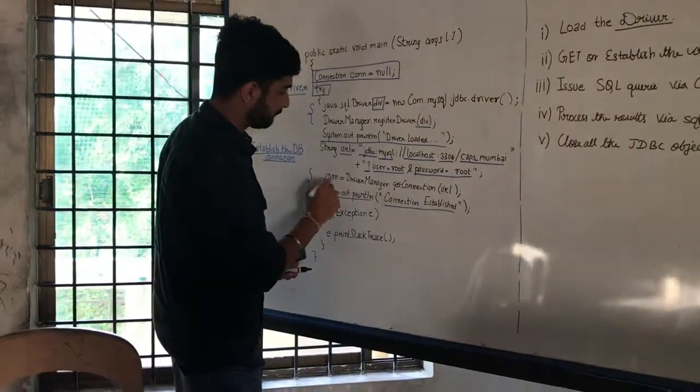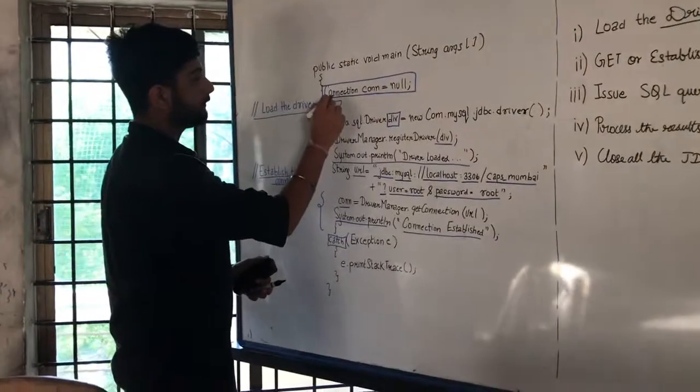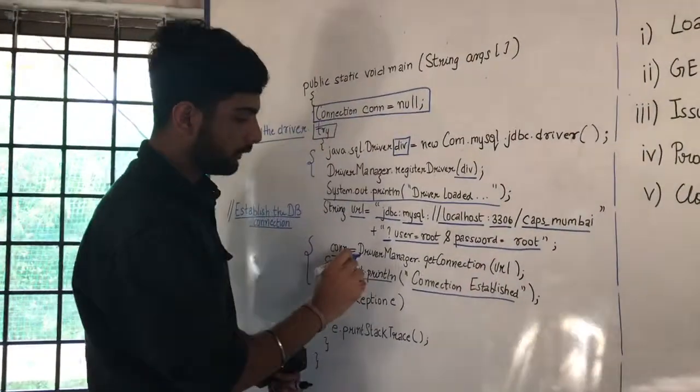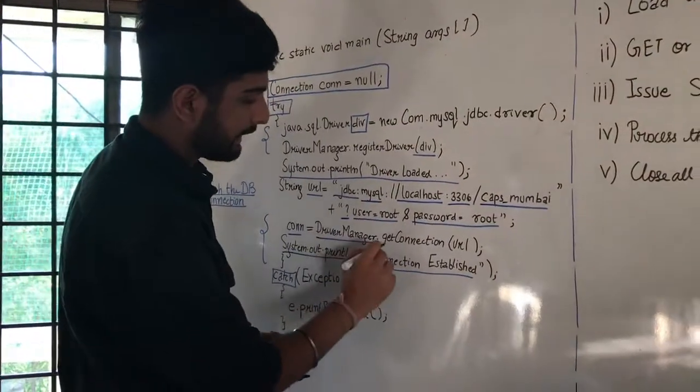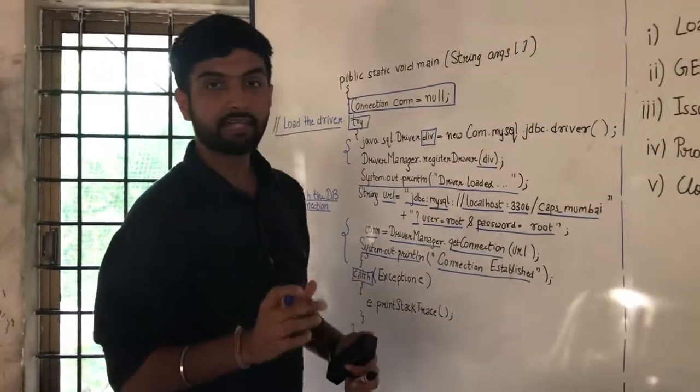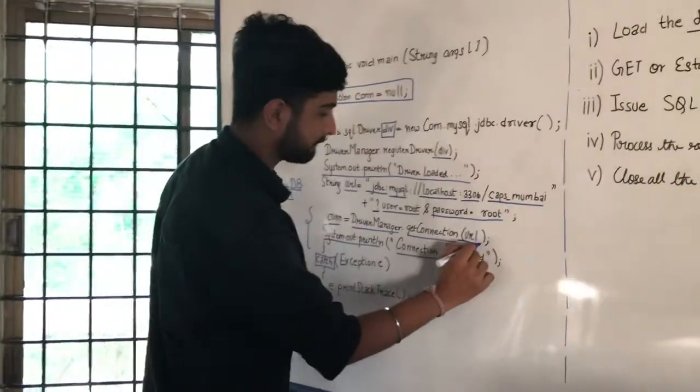Now, we will again pass in the connection. The connection as mentioned is a global variable. We declared here it to be null. But, here now we assign it the value with the help of driver manager and get connection. Get connection is the method that we are using which will have a return type of connection. And, we are passing the url in this get connection method.